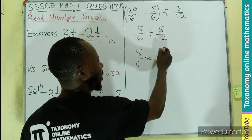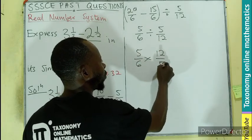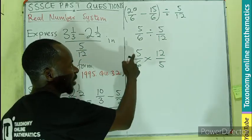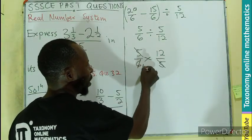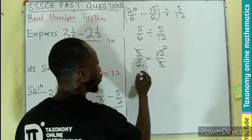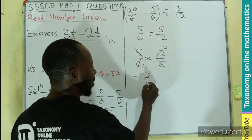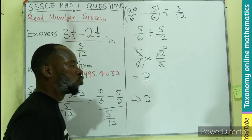So we have 2 divided by 1, which will obviously give us 2. So the simplest form of this fraction is going to be 2, or the final value of the fraction will give us 2.